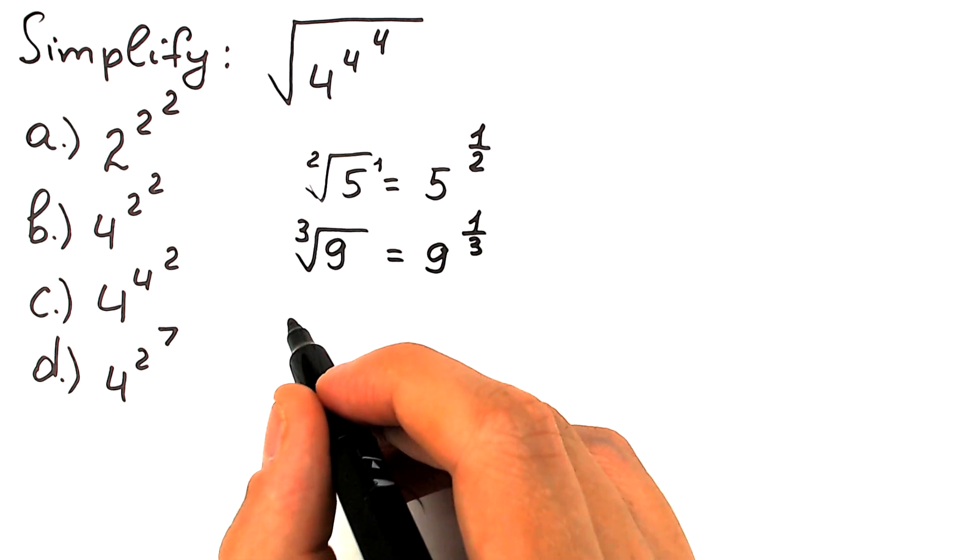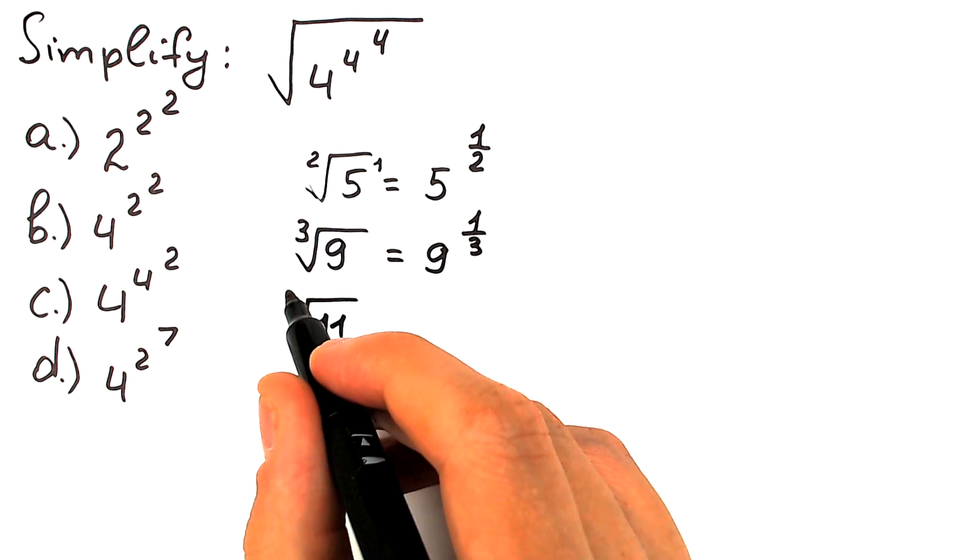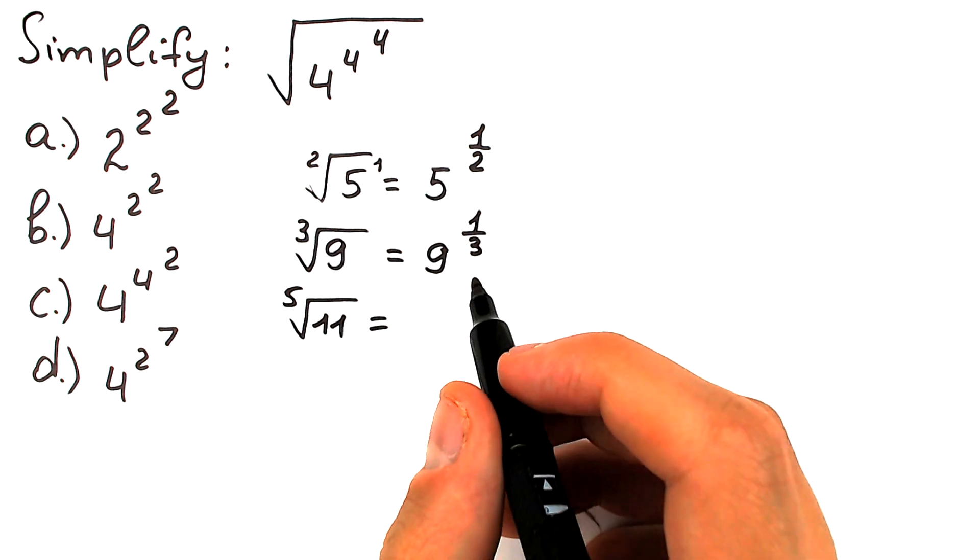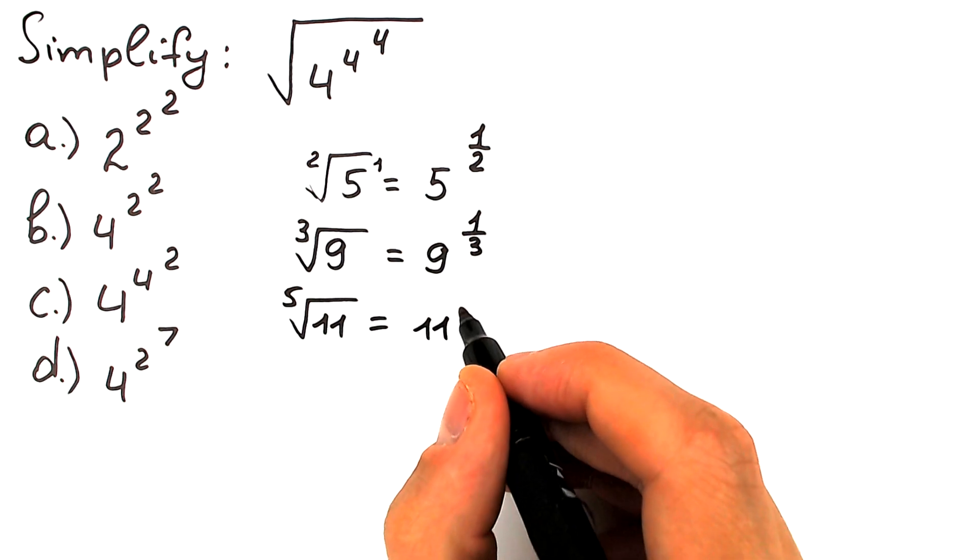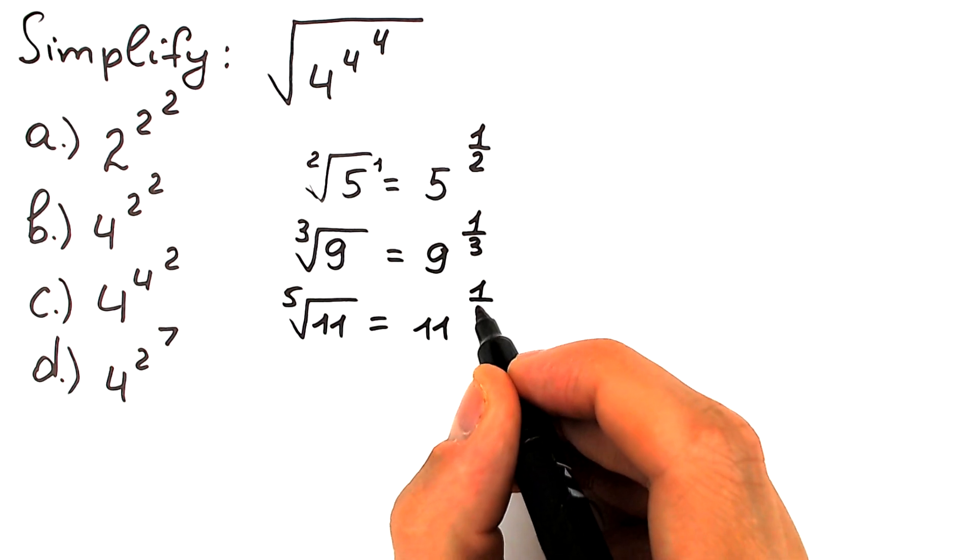Once more example, for example, let's go with fifth root of 11. We can write it as 11 to the power 1 over 5.